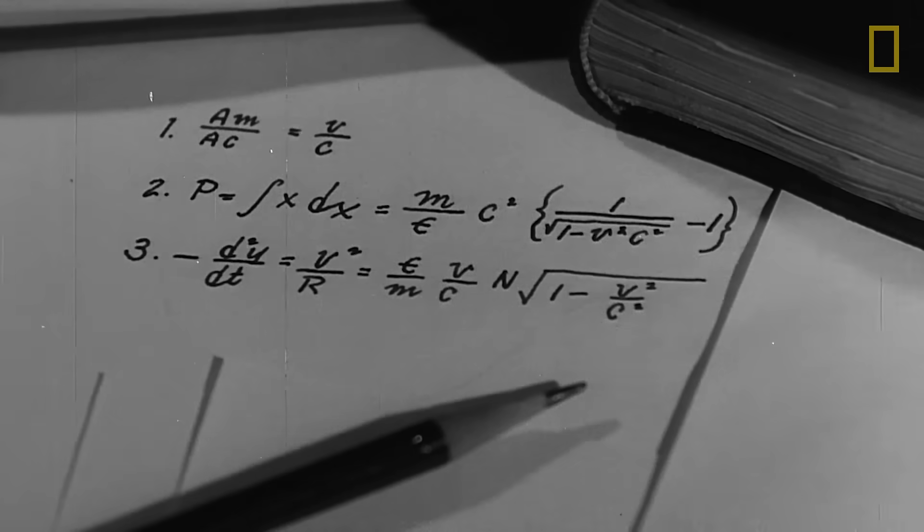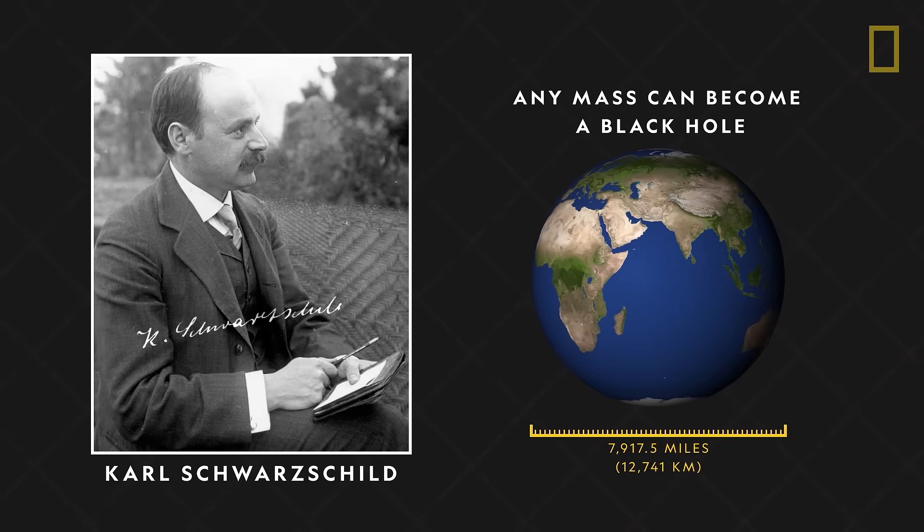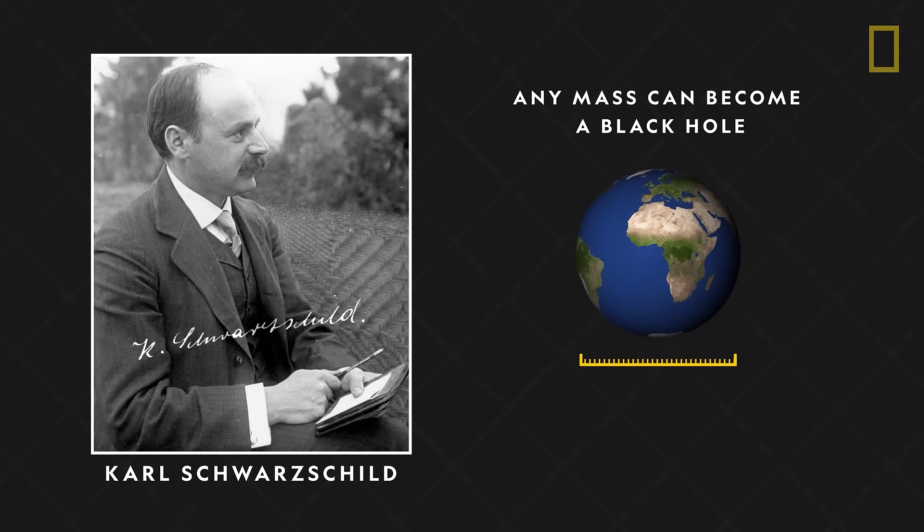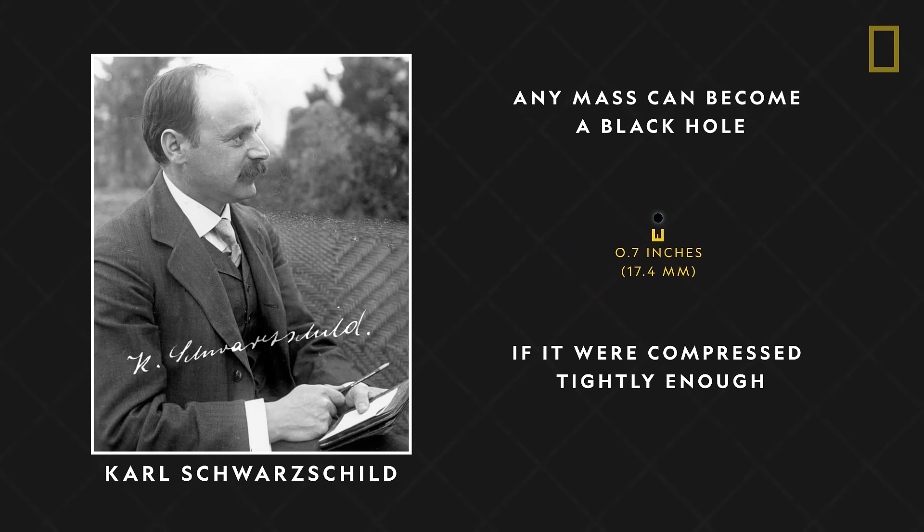Black holes remained largely unknown until the 20th century. In 1916, using Einstein's general theory of relativity, a German physicist named Carl Schwarzschild calculated that any mass could become a black hole if it were compressed tightly enough.